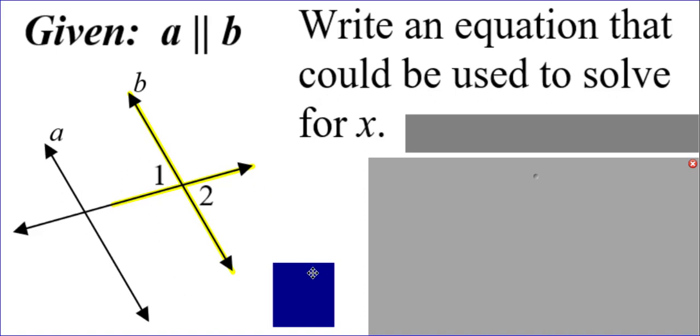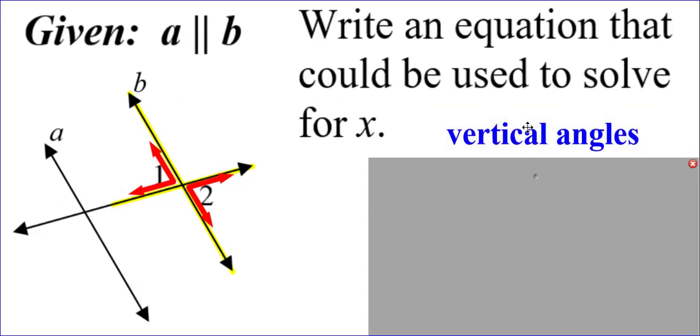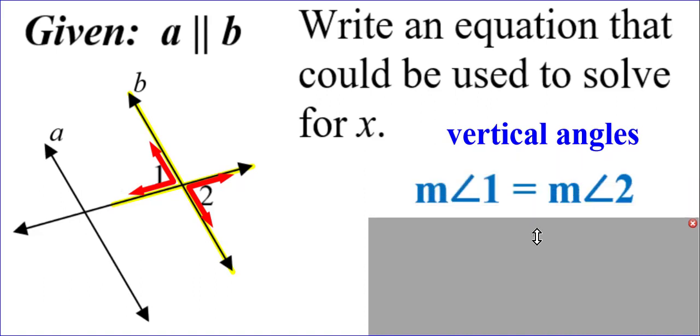Now, I hope you can notice on this drawing that these two angles, 1 and 2, are opposite angles formed by these two intersecting lines that I highlighted for you in yellow. We call those types of angles vertical angles. Why do we care? Because vertical angles are congruent, which means their measures are equal to each other.